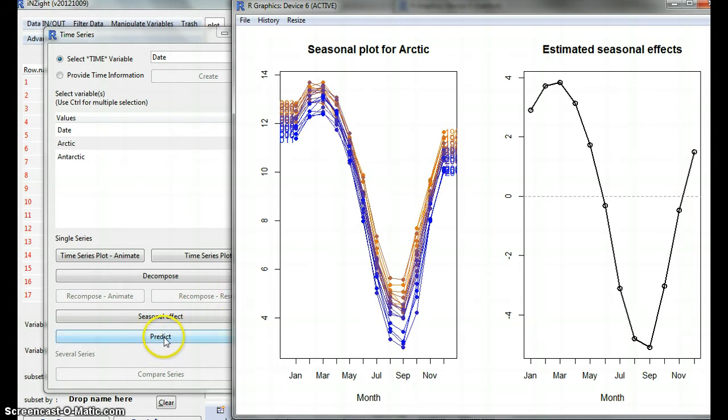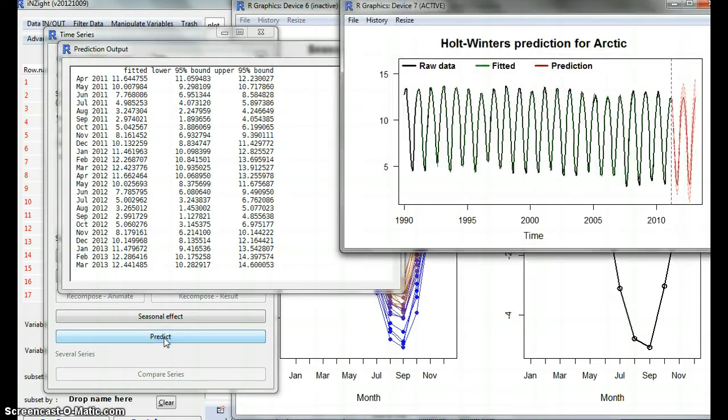Okay. And then we can push this button, and it gives us a prediction. So, it's taking the model and magically calculating what will happen next within upper and lower bounds. Okay. So, your job is to talk about all of this. Okay. Good?